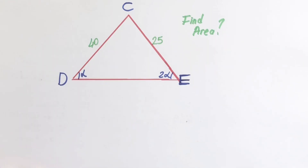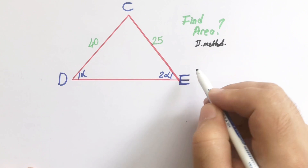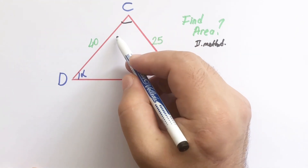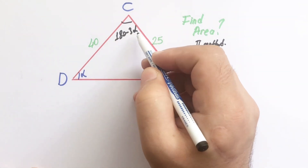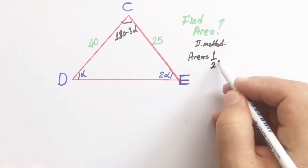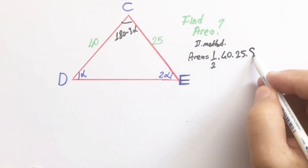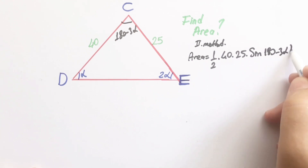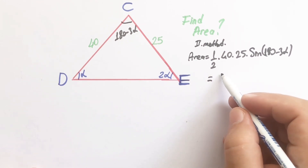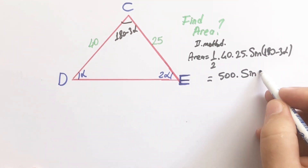Now we will calculate the triangle area using the sine formula as a second method. Here is alpha, here is 2 alpha, therefore this angle must be 180 minus 3 alpha. Let's plug into the formula: the area is equal to one half times 40 times 25 times sine of (180 minus 3 alpha), which equals 500 sine 3 alpha.